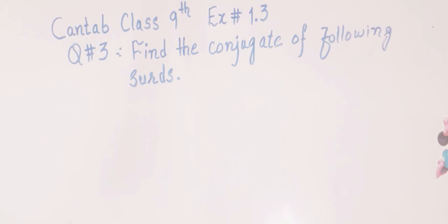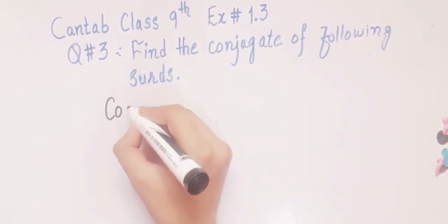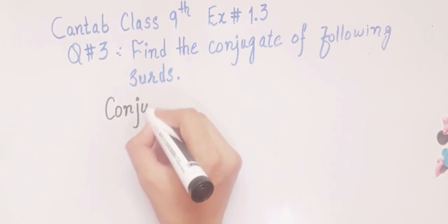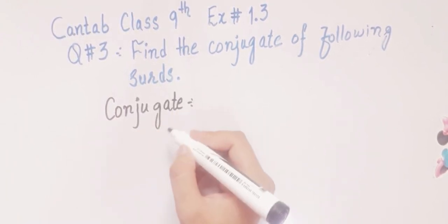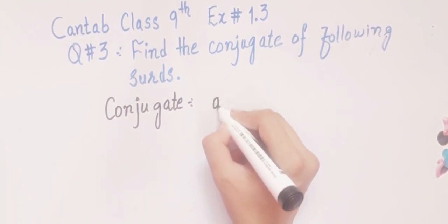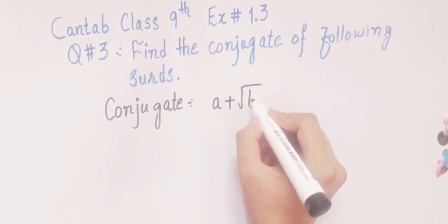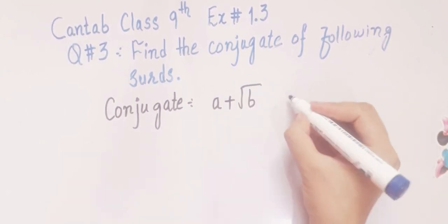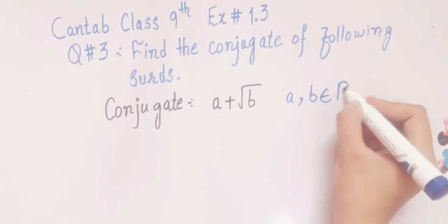First of all, you have to understand what is conjugate. If you have an expression a plus square root of b, where a and b are real numbers belonging to the set of real numbers, the conjugate of a plus square root b will be a minus square root of b.